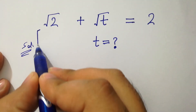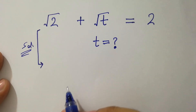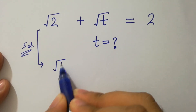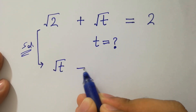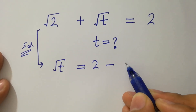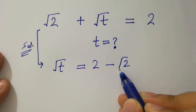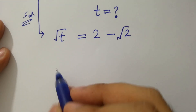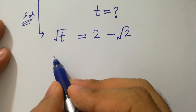This problem can be written as square root of t equal to 2 minus square root of 2. To solve this, take square on both sides.